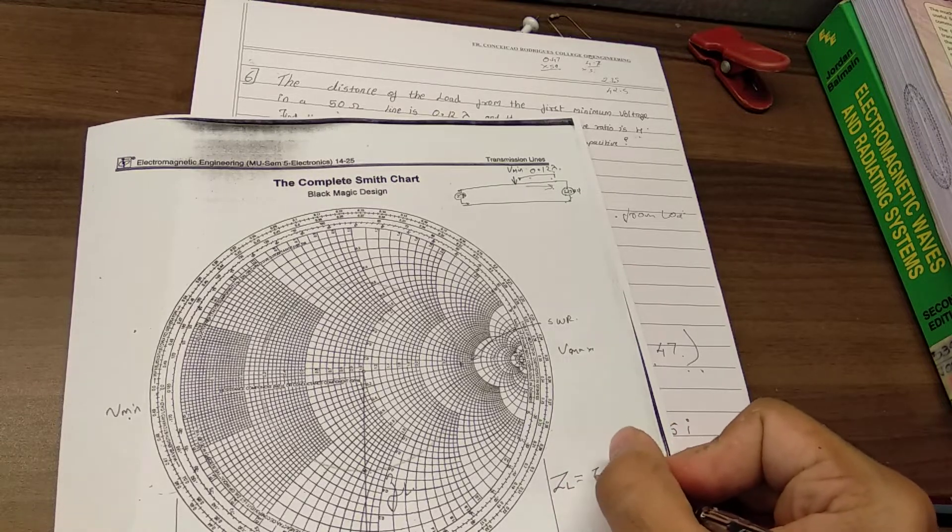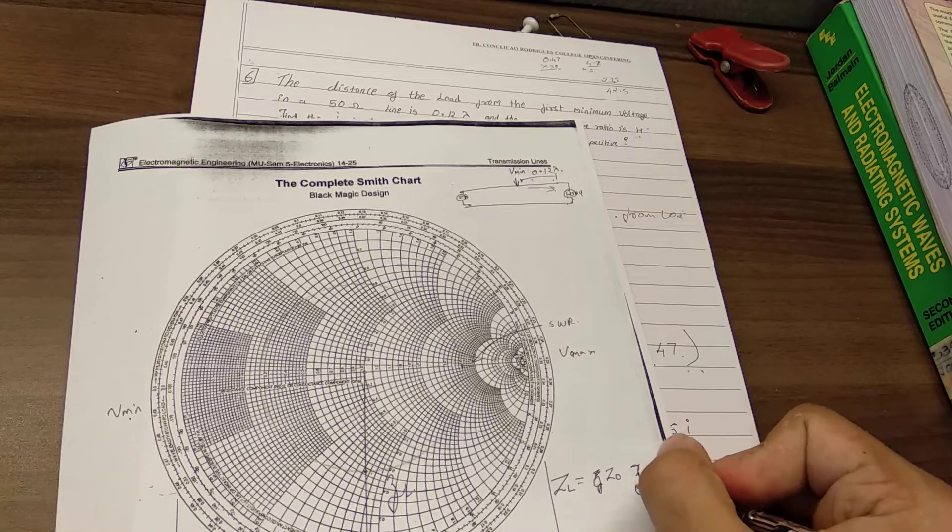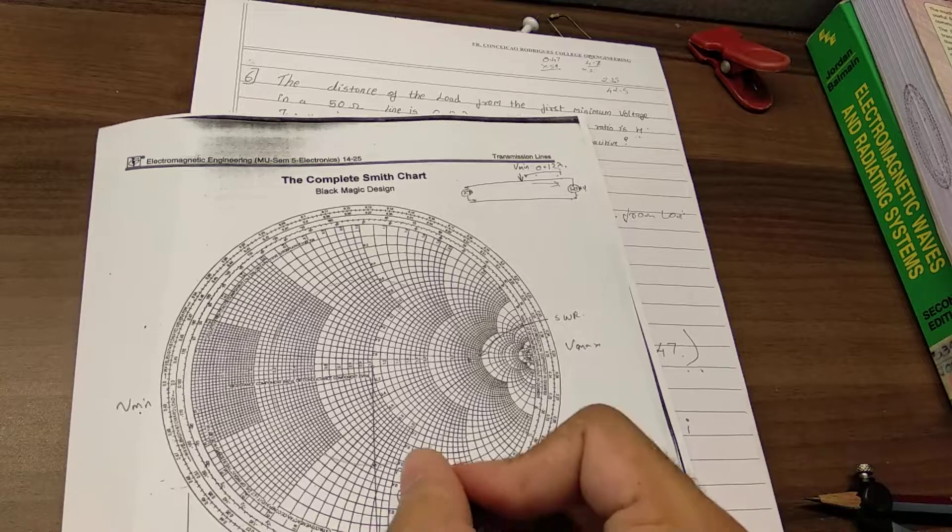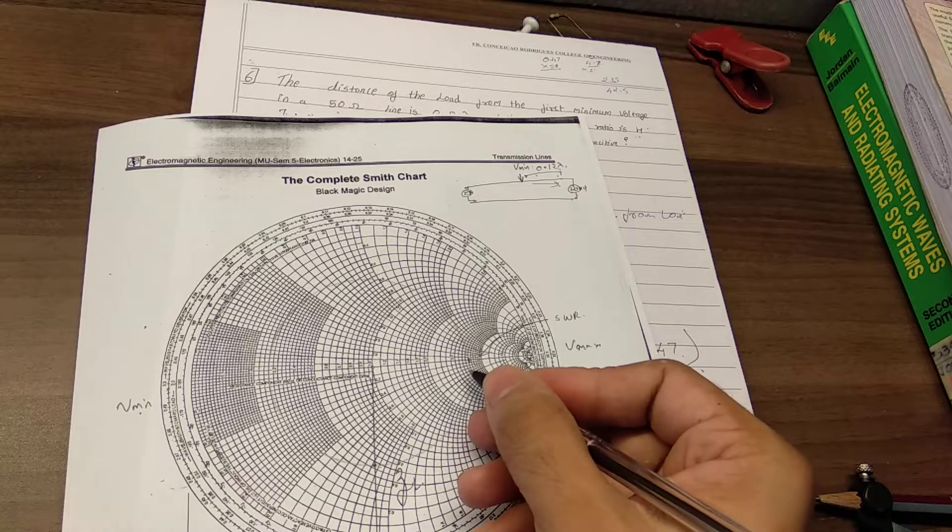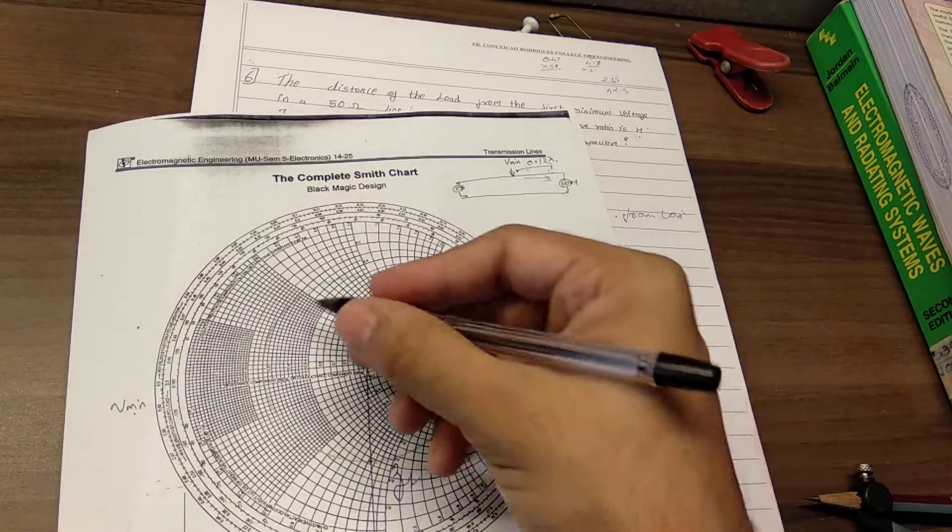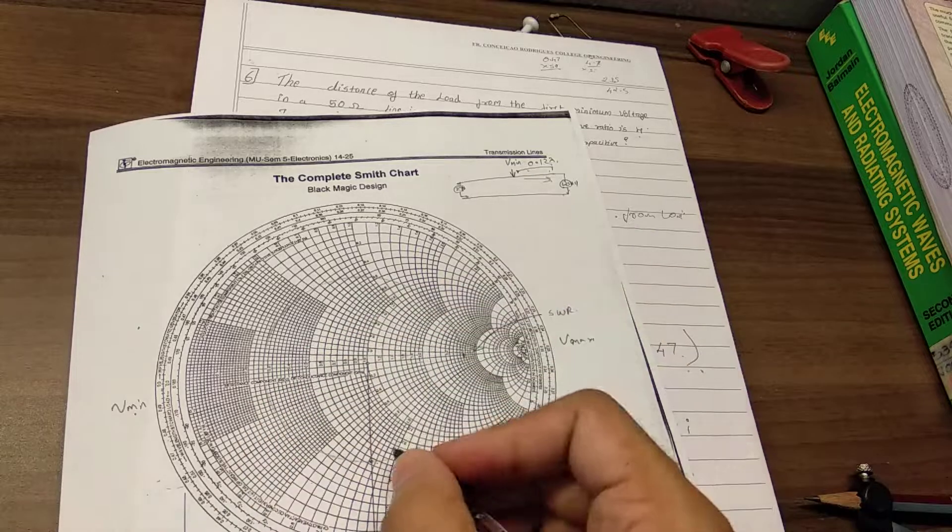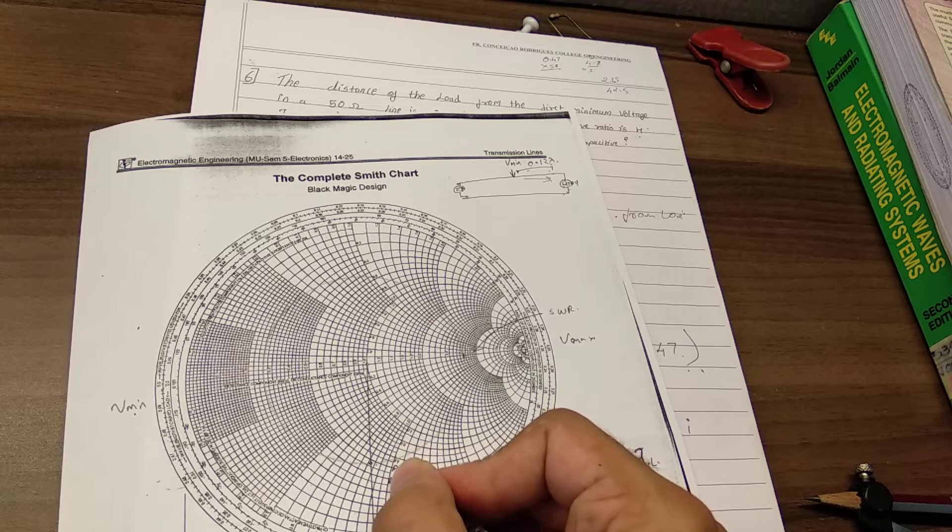This zl, small zl. So now we need to find out our small zl, which is basically two points. The first point would be the big circle. If you can notice, the big circle, it is between 0.4 and 0.6, so it should be around 0.47.